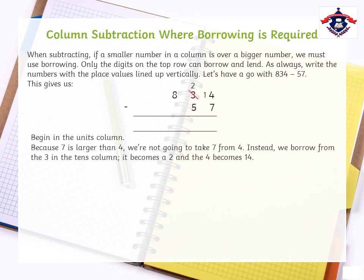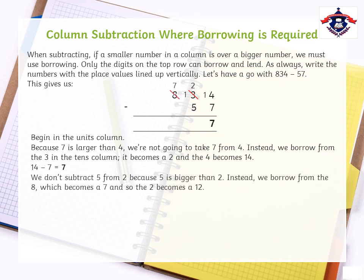Here is a question. Because 7 is larger than 4, we are not going to take 7 from 4. Instead, we will borrow from the 3 in the tens column. This 3 will become 2 and the 4 becomes 14. We don't subtract 5 from 2 because 5 is bigger than 2. Instead, we borrow from the 8, which becomes a 7 and makes 2 a 12. We can now subtract easily. 7 with 0 gives us 7, so the answer is 777.